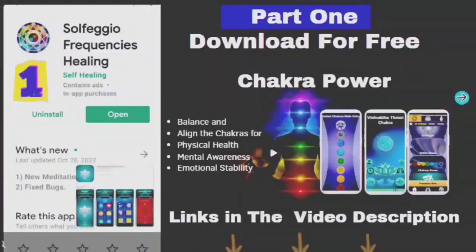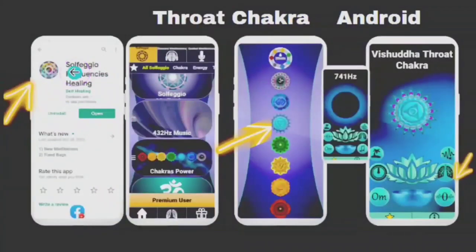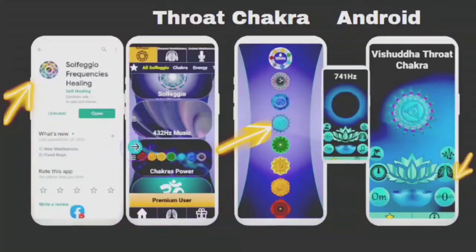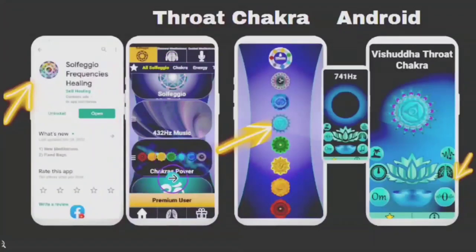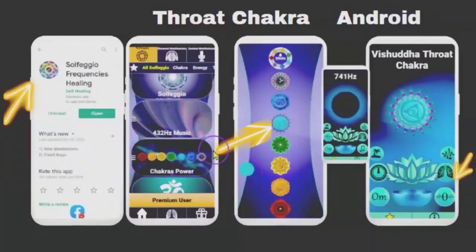After you install the app, you will open it up. You will see this screen — it will give you a number of choices. You want to look for the chakra's power and tap on open. You will have to watch an ad with the free version in order to gain access. You can become a premium user if you choose. I am a premium user and I am not an affiliate with the company — I just use the app because I find it is the best one on the Google Play Store. You will then tap on the chakra's power pack, open up, and count five icons from the bottom, which will give you your throat chakra, which is 741 hertz, the vijahada.